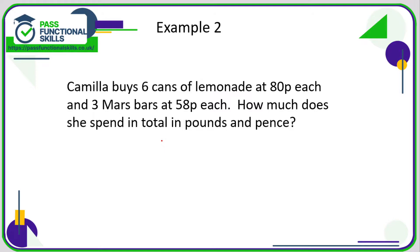Camilla buys six cans of lemonade at 80 pence each and three Mars bars at 58p each. How much does she spend in total in pounds and pence? We're going to work out the price of the lemonade first — six cans at 80p each, so six times 80p.